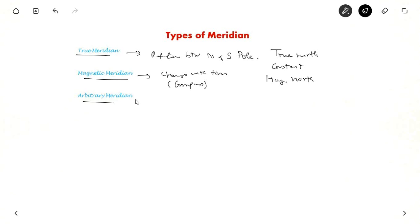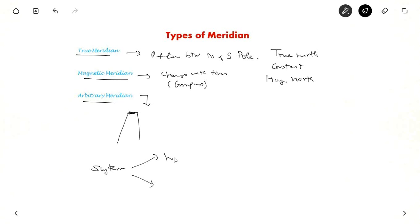Arbitrary meridian is any convenient reference point. Suppose you are living in a seashore area and there is a tall tower — you can take the top of the tower as the arbitrary meridian. This is only used for local purposes. The systems used to define these directions are classified into two types: one is whole circle bearing, abbreviated as WCB, and another is reduced bearing, abbreviated as RB.